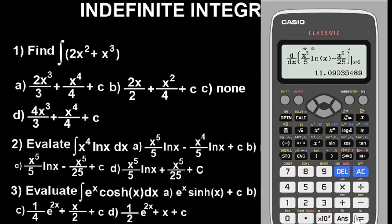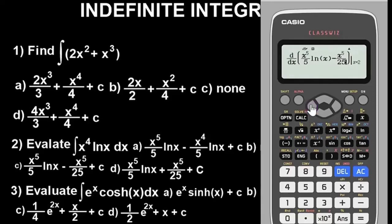Let's also check option D. The only difference from option C is a plus sign where option C has a minus sign. Substituting gives a different value, not 11.09. So our answer for question 2 is option C.